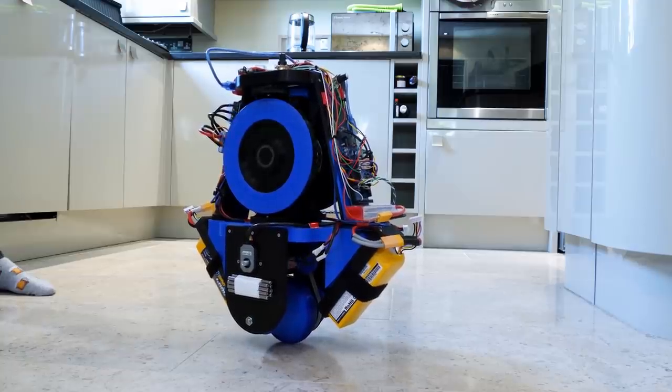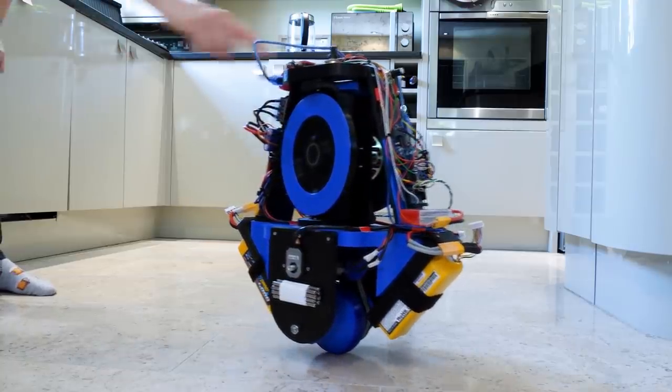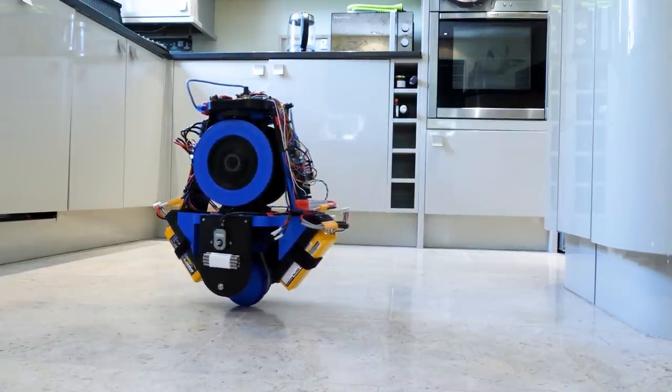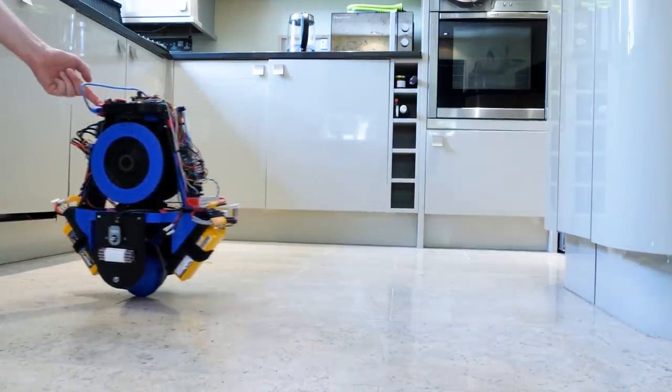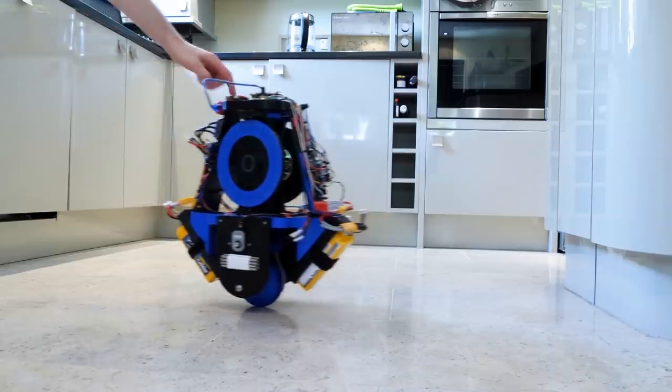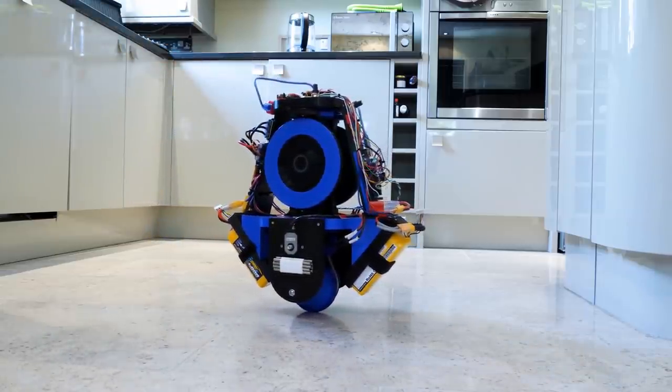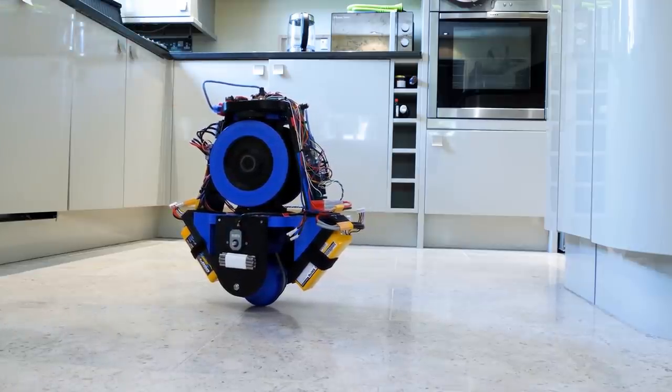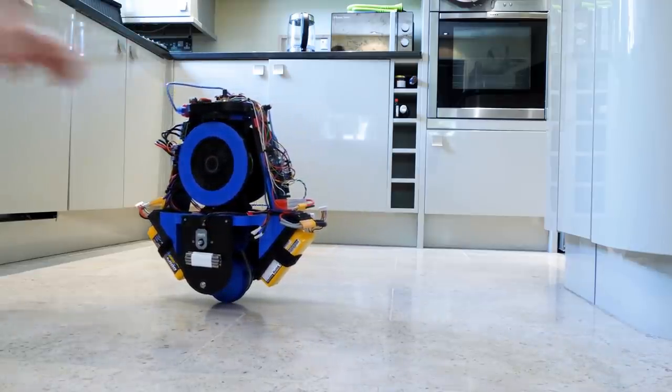These machines had two gyroscopes spinning in opposite directions and being actively driven in opposite directions in order to cancel out any unwanted gyroscopic precession. The main issue though with using gyroscopes is that they can only exert force when they're being actively driven in their control axis. And so if they reach the end of their physical limit then the device can no longer balance.